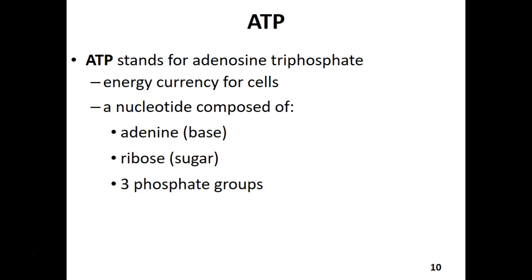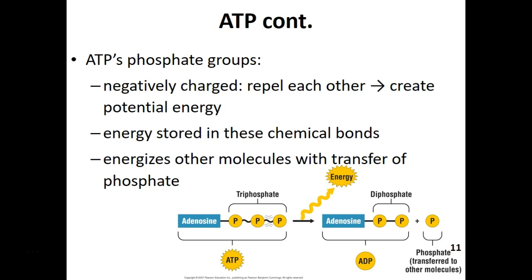ATP is the energy currency for our cells. ATP stands for adenosine triphosphate. Triphosphate means there are three phosphates. ATP is a nucleotide, which is a monomer of nucleic acids, and it uses an adenine base, a ribose sugar, and three phosphates. The bond between the second and third phosphate is a high-energy bond.